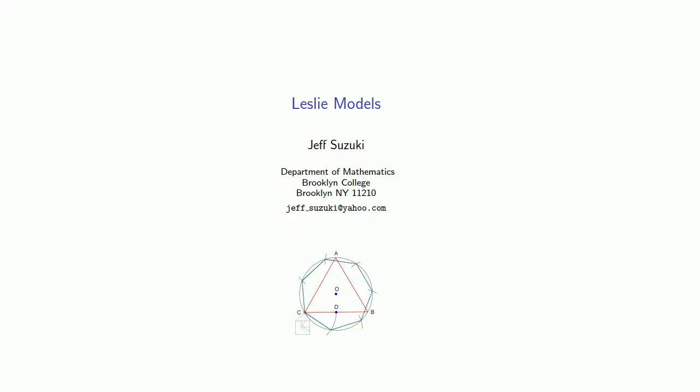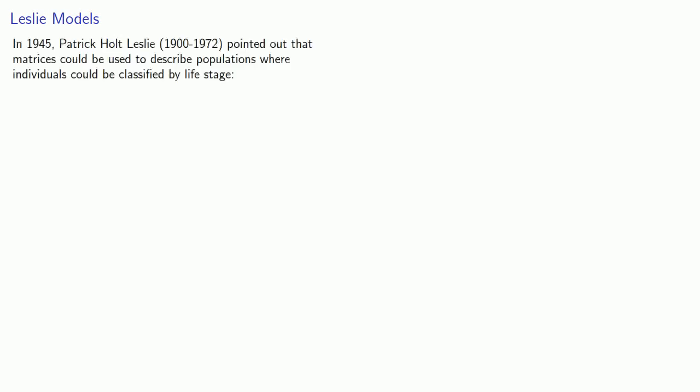One of the important uses for matrices is describing what's called a Leslie model. In 1945, the Scottish mathematician Patrick Holt Leslie pointed out that we can use transition matrices to describe populations where individuals can be classified according to life stages.